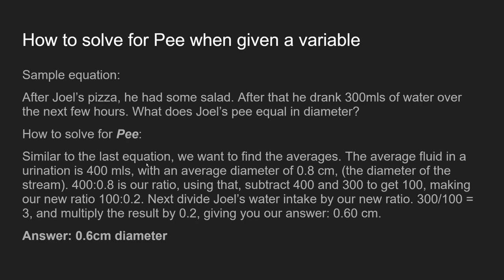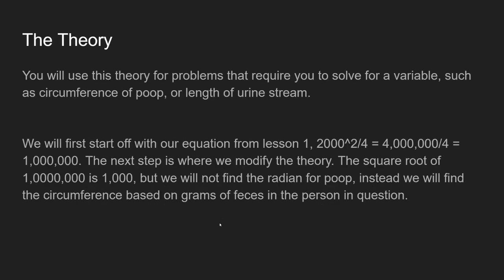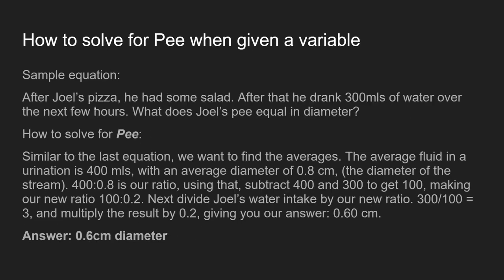It's basically the same equation as last time. You get the ratio of the averages, which is 400 to 0.8. Use that and subtract the average by Joel's amount, so that it's 100, and it gives us a new ratio of 100 to 0.2. Now divide his water intake, which is 300, by the number we just got, which is 100 in our new ratio. So 300 divided by 100 is 3, and multiply that by 0.2 — 3 times 0.2 is 0.6. That's our answer.